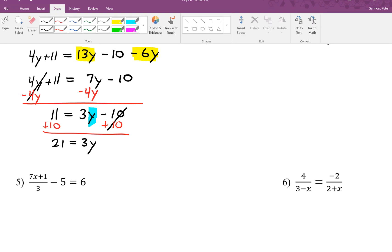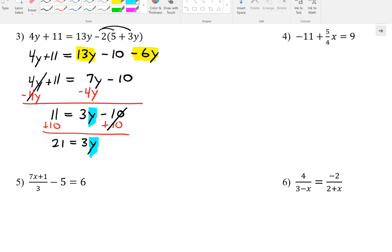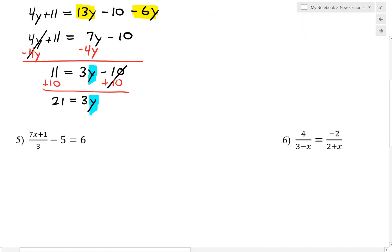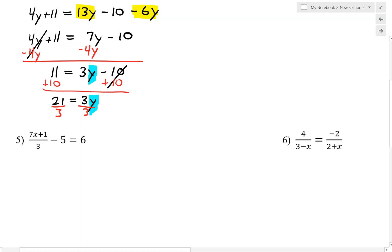Now we need to isolate the y by getting rid of the 3. We're going to do that through division. So we're going to divide both sides of our equation by 3. And we end up with 21 over 3 is 7 equals, the 3s cancel, y.